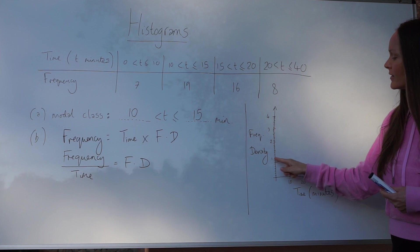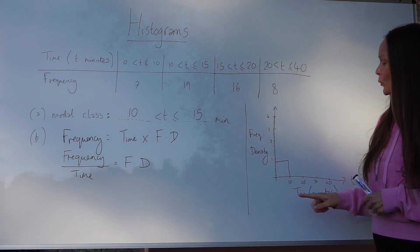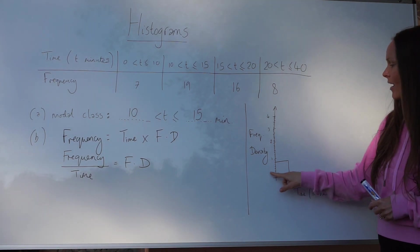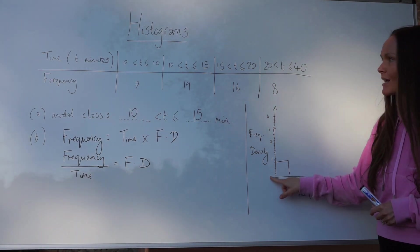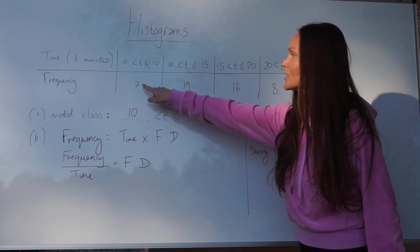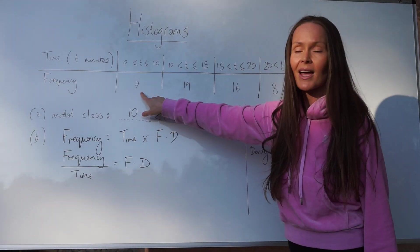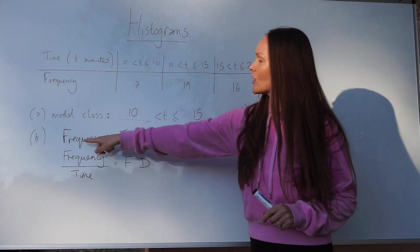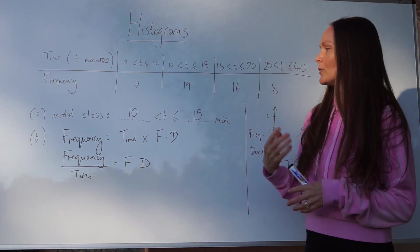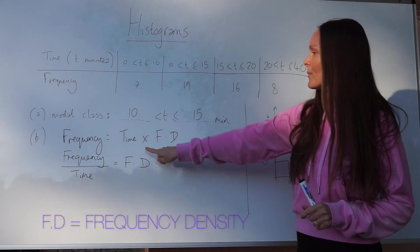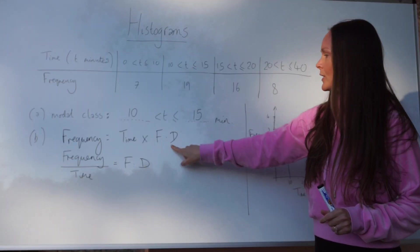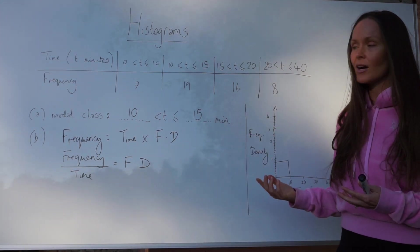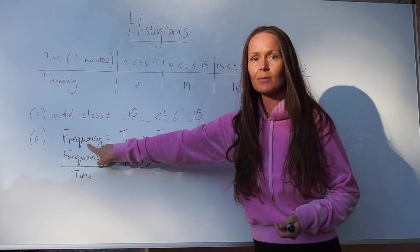If we look at the bar that they've drawn here, you would multiply time by the height which is 0.7, which gives you 7, which is indeed the frequency. So it works. Now here I've written down an equation connecting time, frequency, and frequency density. Remember I just said the base is time and the height is frequency density. So base times height gives you the area of the rectangle, which is frequency.